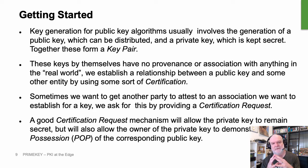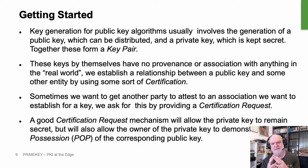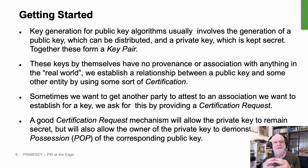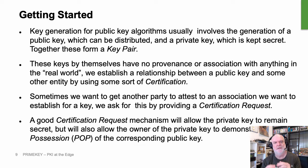Ideally a good certification request will allow us to keep the things we want private, private, and at the same time testify that the thing we want to make public — that claims to represent us — has really been us. This is called proof of possession. Proof of possession mechanisms provided to certification authorities are primarily the means by which certification requests are actually usable. It's the key concept when looking at a certification request: what proof of possession mechanism you actually need to use.